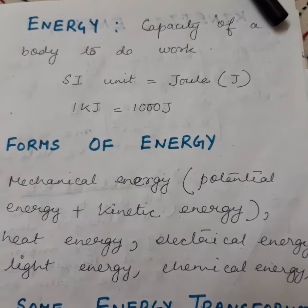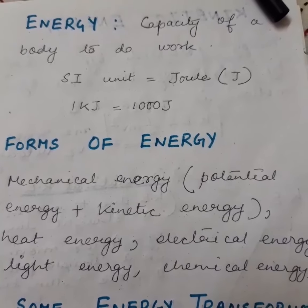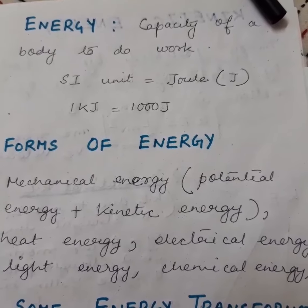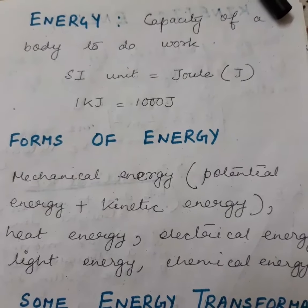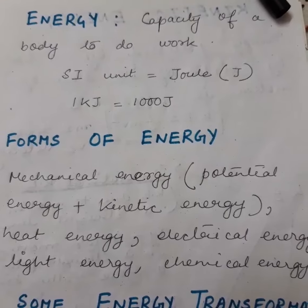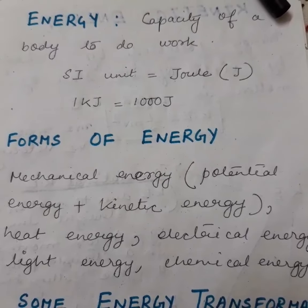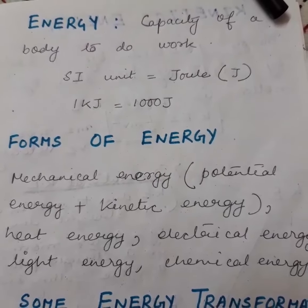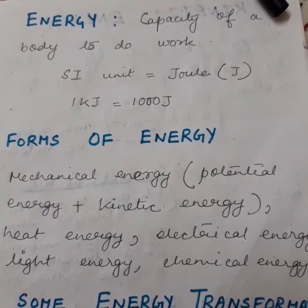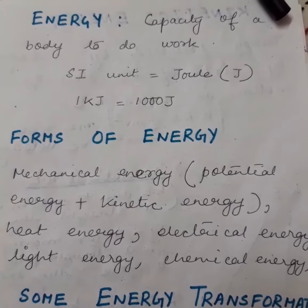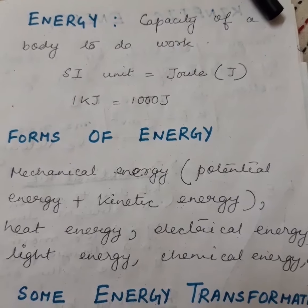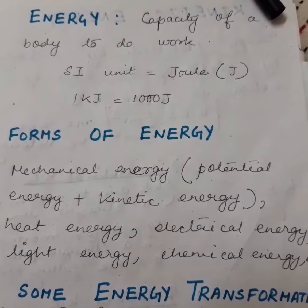The units of work done I also covered — the CGS unit, the SI unit — in terms of erg and in terms of Joule — everything I mentioned in the last video. Please follow the videos very carefully. I also explained the definition of 1 Joule: when we can consider the work done to be 1 Joule. I also explained the three cases when work done is said to be positive, negative, and zero.